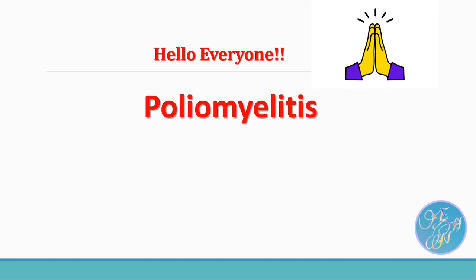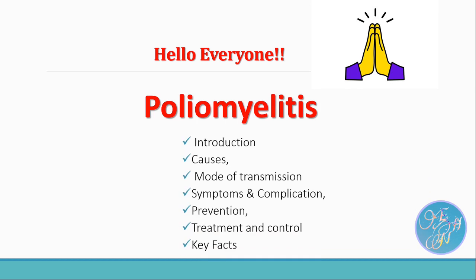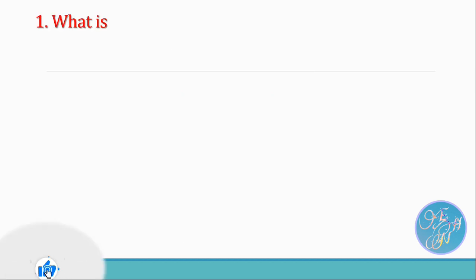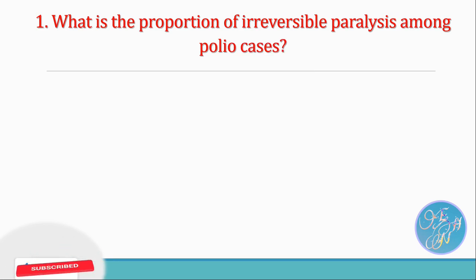Question 1: What is the proportion of irreversible paralysis among polio cases? Option 1 is 1 in 100 infections. Option 2 is 1 in 200 infections. Option 3 is 1 in 500 infections. Option 4 is 1 in 1000 infections. Please think about it and write your answer down in your study sheet.